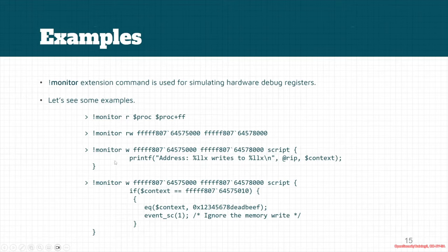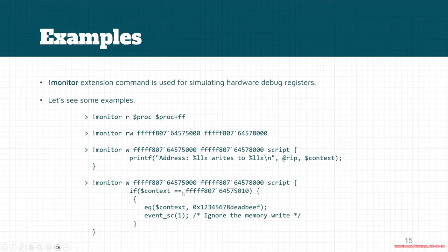Another example uses the script engine only for writes over a specified range, showing the context and target byte for each modified byte. The last example monitors writes for a range and checks whether the target memory address equals a specific address — if so, it changes the value to 0x40 and then ignores the memory write. We'll explain this command in more detail in a future part.